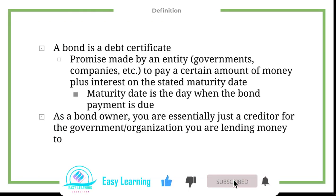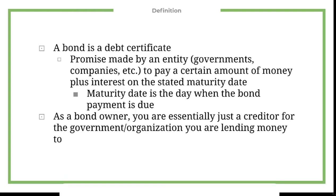That promise is to pay a certain amount of money plus interest on the stated maturity date. The maturity date is basically just a due date for the bond payment.